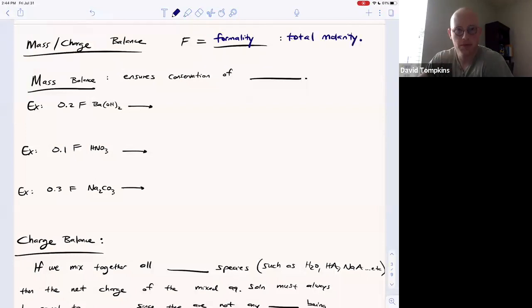For example, if you had H2A in solution and it dissociated into HA minus and A2 minus, for example, the formality would be the addition of the concentrations of all A containing species.